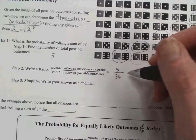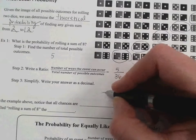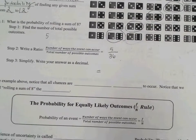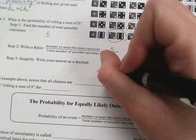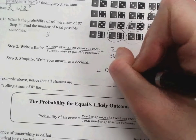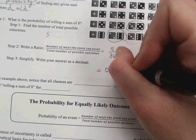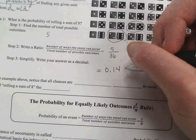The last step says to write as a decimal. To write as a decimal, remember we just divide. So we would divide numerator by denominator, 5 divided by 36. 0.14.